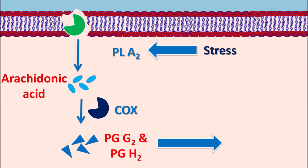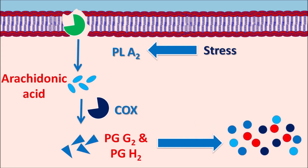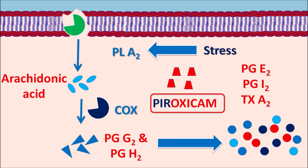COX-1 is constitutive in nature — always present — but COX-2 is inducible during inflammation. COX-2 acts on arachidonic acid and cleaves it into the cyclic endoperoxides PGG2 and PGH2, which are further converted into prostanoids and thromboxanes. These include PGE2, PGI2, and thromboxane A2. PGE2 and PGI2 are responsible for vasodilation resulting in increased inflammatory response, whereas thromboxane A2 activates platelets causing platelet aggregation and thrombotic events. Piroxicam blocks both COX-1 and COX-2, inhibiting synthesis of prostaglandins and thromboxane A2, thereby controlling inflammation.